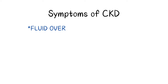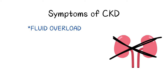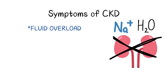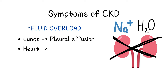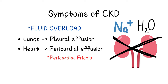Fluid overload can occur in CKD due to the kidney's reduced ability to excrete sodium and water. When fluids build up in the lungs, it can lead to pleural effusion. When this happens in the heart, we call it pericardial effusion, which can lead to a pericardial friction rub. Fluid retention can also cause edema of the hands and feet.